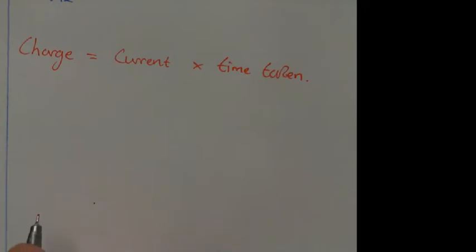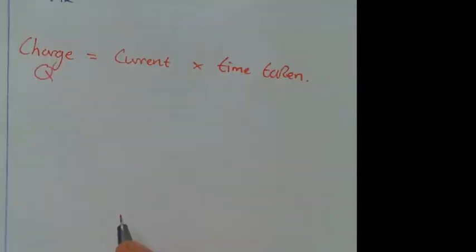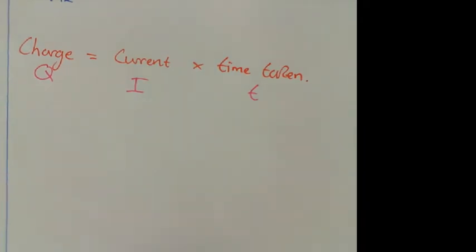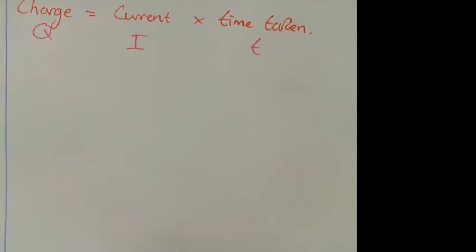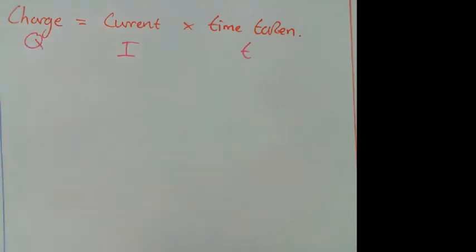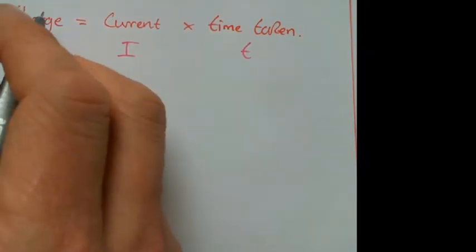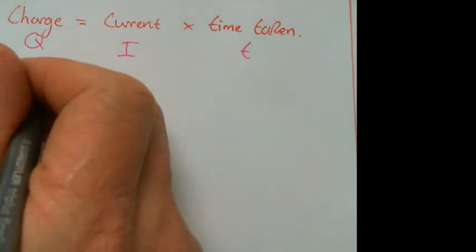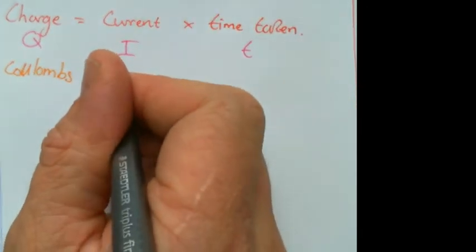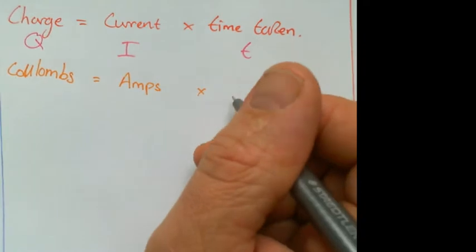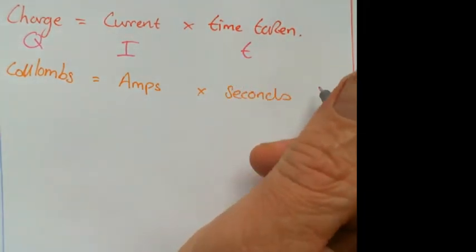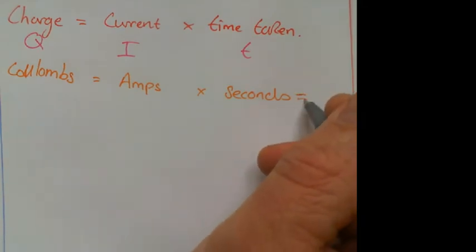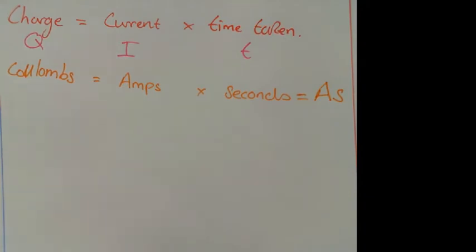The symbols for this are Q for charge, I for current, and T for time. Don't ask me why I and Q — physicists just ran out of letters. The units are: charge is in Coulombs, current is in amps, and time is in seconds. If you forget that charge is measured in Coulombs, you could always say amp seconds, which is just A·S — amps times seconds.